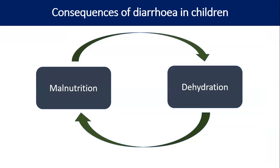In children, diarrhea is very important to diagnose and treat, otherwise it gives rise to dehydration, fluid loss, and malnutrition. Malnutrition also predisposes to more diarrhea — chronic and recurrent — creating a vicious cycle if we cannot diagnose and treat diarrhea promptly.